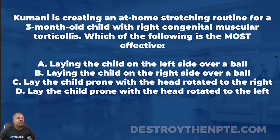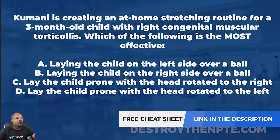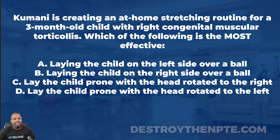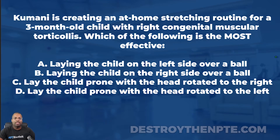For this week's clinical file, we have Kamani, who is creating an at-home stretching routine for a three-month-old child with right congenital muscular torticollis. Which of the following is the most effective? A: laying the child on the left side over a ball. B: laying the child on the right side over a ball. C: lay the child prone with the head rotated to the right. D: lay the child prone with the head rotated to the left.